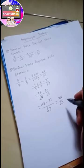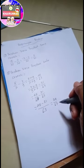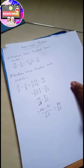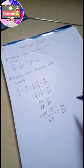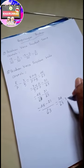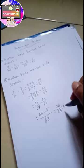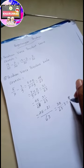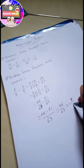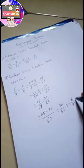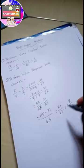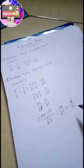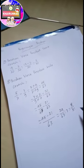Ini masih bisa kita sederhanakan lagi ya. Pokoknya, kalau pecahan itu selagi masih bisa dibagi ya, terus disederhanakan sampai mentok nanti tidak bisa dibagi lagi. Dibagi dengan angka 3. Hasilnya? 24 dibagi 3 adalah 8. 63 dibagi 3 hasilnya? 21. Ini hasilnya dari 5 per 7 dikurangi 3 per 9 hasilnya 24 per 63 disederhanakan menjadi 8 per 21.